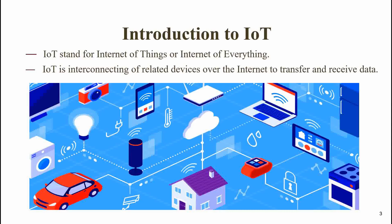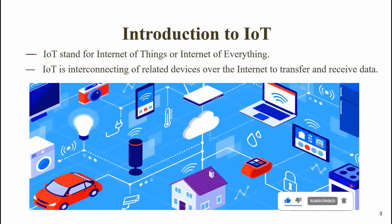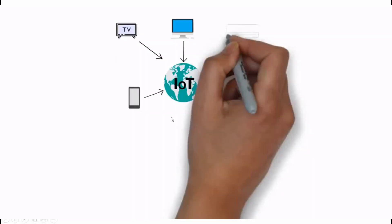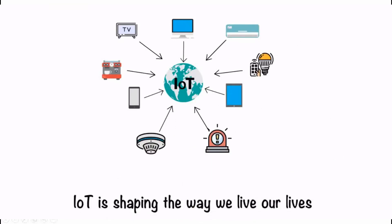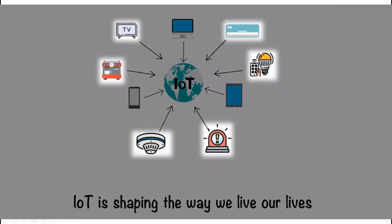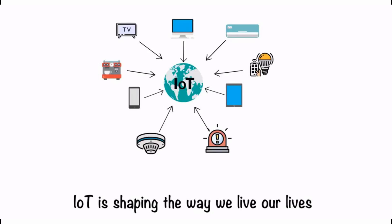Many devices are interconnected with the help of networks, and those interconnected devices are used for exchanging data — transferring from sender to receiver or from receiver to sender — and also exchanging information with the help of interconnected devices. For example, mobile, laptop, desktop, server, cameras, TV, cars, smart home — all can be interconnected over the internet.